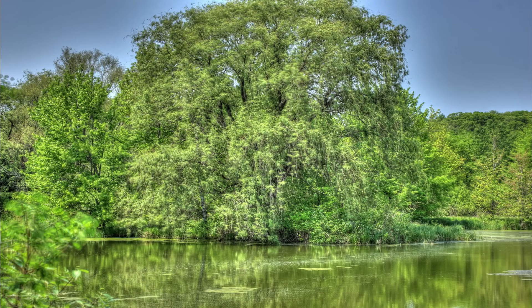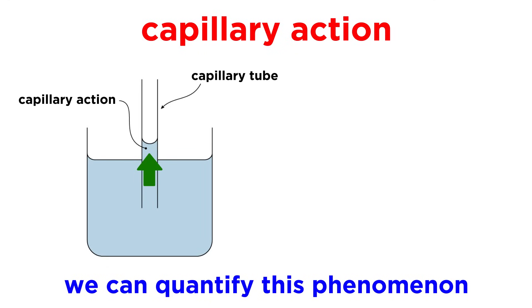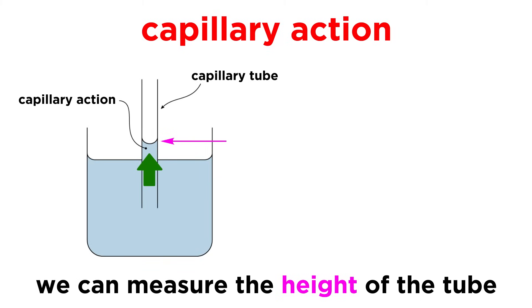Even nature uses capillary action, as some plant cells are able to bring water and nutrients up from the soil and into the roots of the plant, partly by capillary action. We can quantify capillary action in a specific manner by seeing the height that the liquid will rise up to in a glass capillary tube, and this height will depend on the surface tension, the contact angle between the liquid and the tube, as well as the radius of the tube, the density of the liquid, and the acceleration due to gravity.